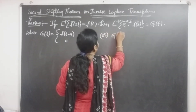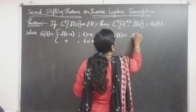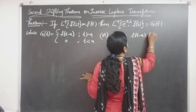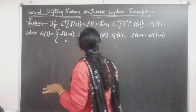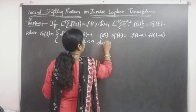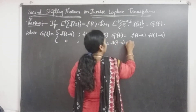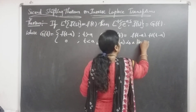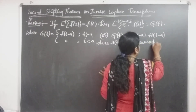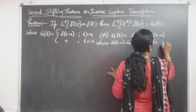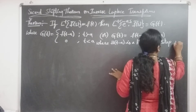Or, g of t is equal to f of t minus a multiplied by h of t minus a, where h of t minus a is the Heaviside unit step function.